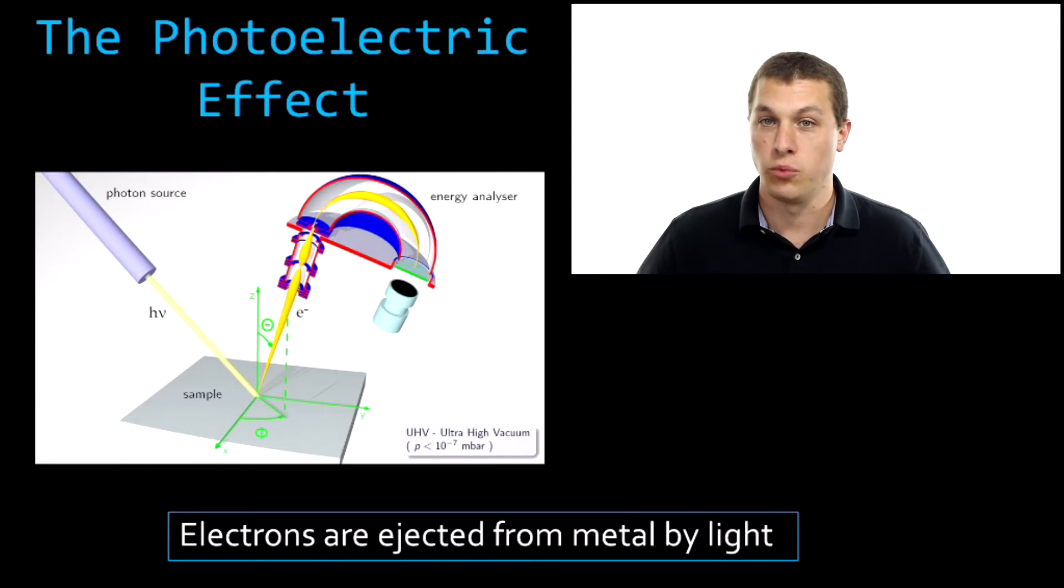Before it, we thought of light as a wave, an oscillating electric field. Afterwards, we thought about light as a particle sometimes and a wave at other times. So what we're going to do in this video is talk about this experiment and its result in a qualitative way. And in another video, we're going to do some of the math associated with this experiment.